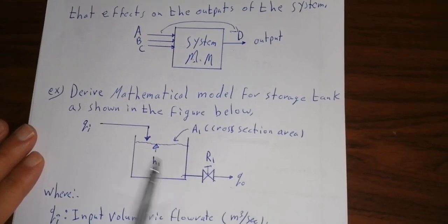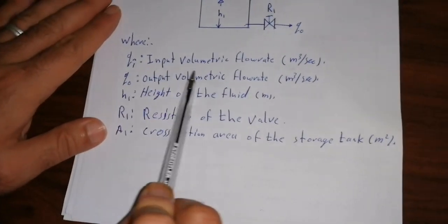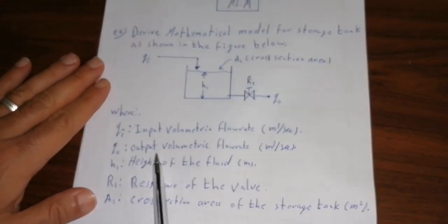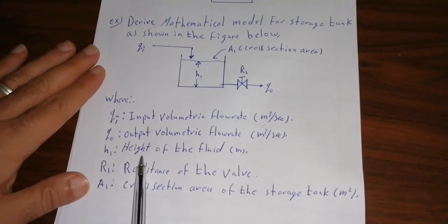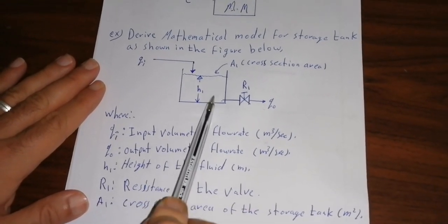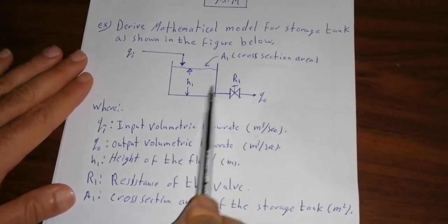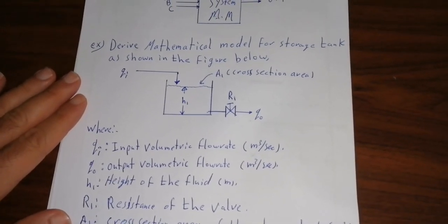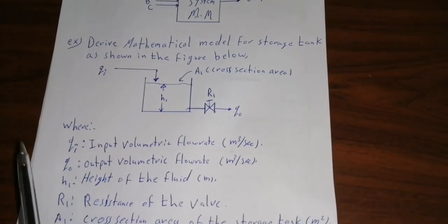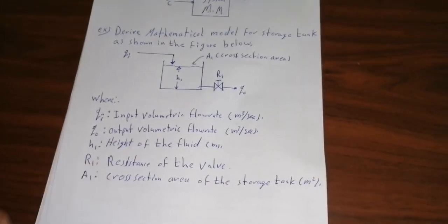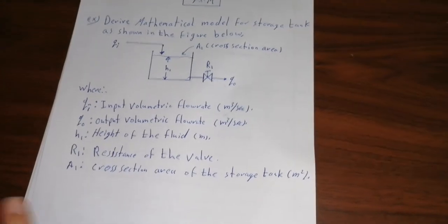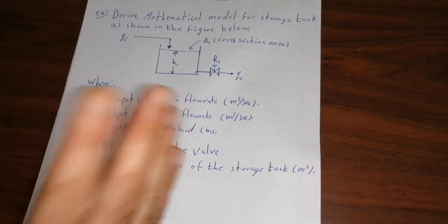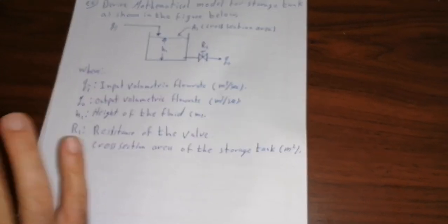Look at this system. This is a storage tank. QI is the input volumetric flow rate in cubic meters per second, and Q_out is the output volumetric flow rate in cubic meters per second. H1 is the height of the fluid inside the storage tank, A1 is the cross-sectional area of the storage tank, and R1 is the resistance of the volumetric flow rate. We have to identify our input parameters, output, and the interaction between input and output.